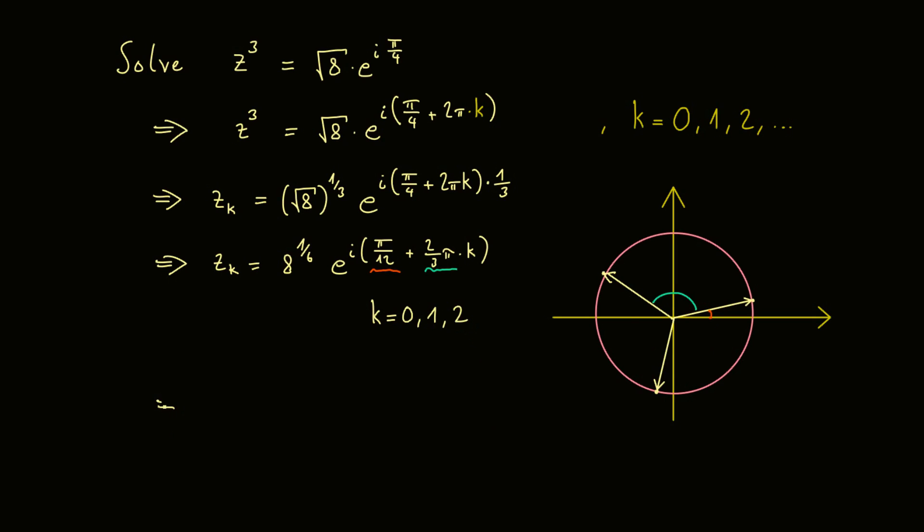So all this we should put in a tidy solution in the end. So the first solution, z0, is 8 to the power 1 over 6, which is just the square root of 2. That is what you can calculate. But remember, this is just the radius of the whole circle here. And as the first solution we have the angle π over 12 plus 0.